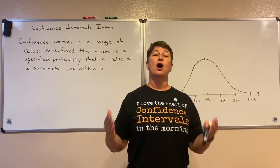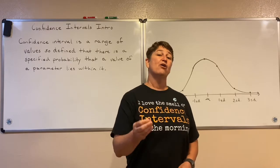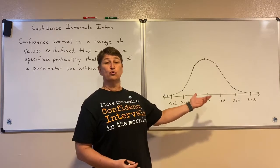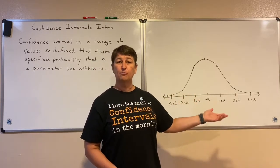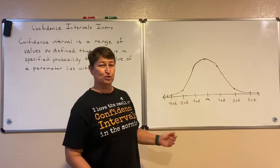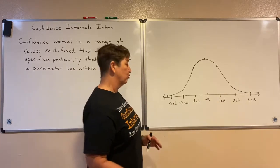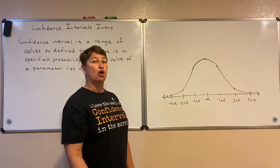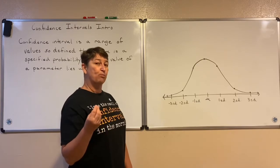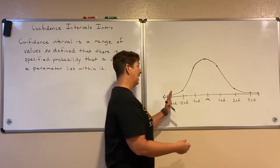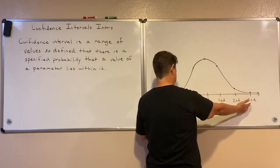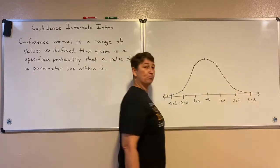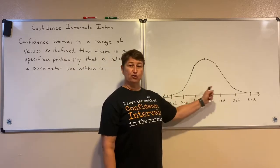I'm going to give you a level of confidence that I can tell you where a specific parameter lies. Sometimes we use a normal distribution when talking about this. We know from the empirical rule that 99.7% of our data lies within three standard deviations. So I can say with 99.7% confidence that a value is going to lie between those two numbers — I can have a 99.7% confidence level that the data value is going to fall there.